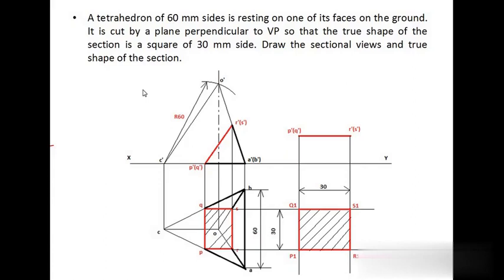To find the height of the tetrahedron: draw the top view of the base ABC as an equilateral triangle. Draw projectors from A and B to get A dash and B dash, and from C to locate C dash. The front view of the base coincides with the XY line. The top view of edge OC is parallel to the XY line, so its front view is in true length. Draw a projector through O of any height, then draw an arc of radius 60 mm with center C dash — the intersection of this arc with the projector through O gives O dash, the apex.